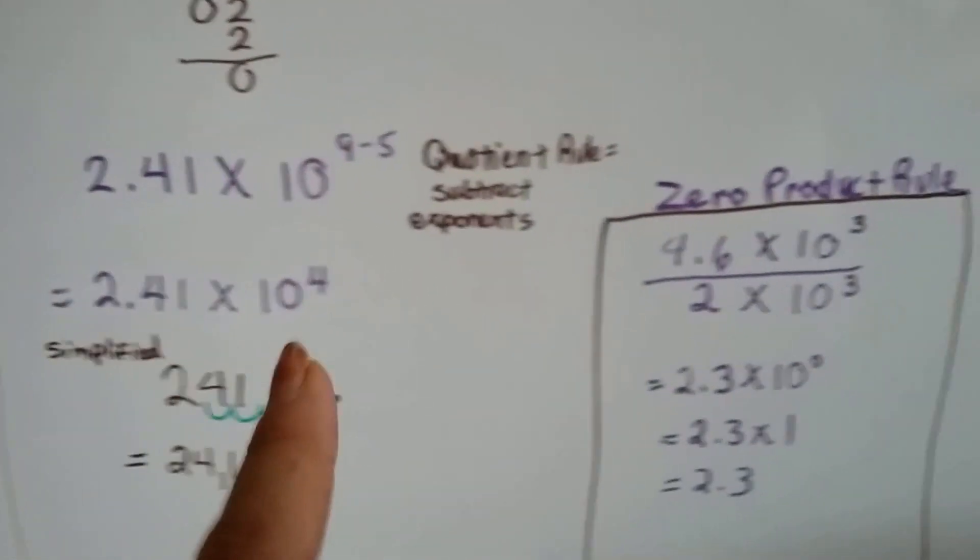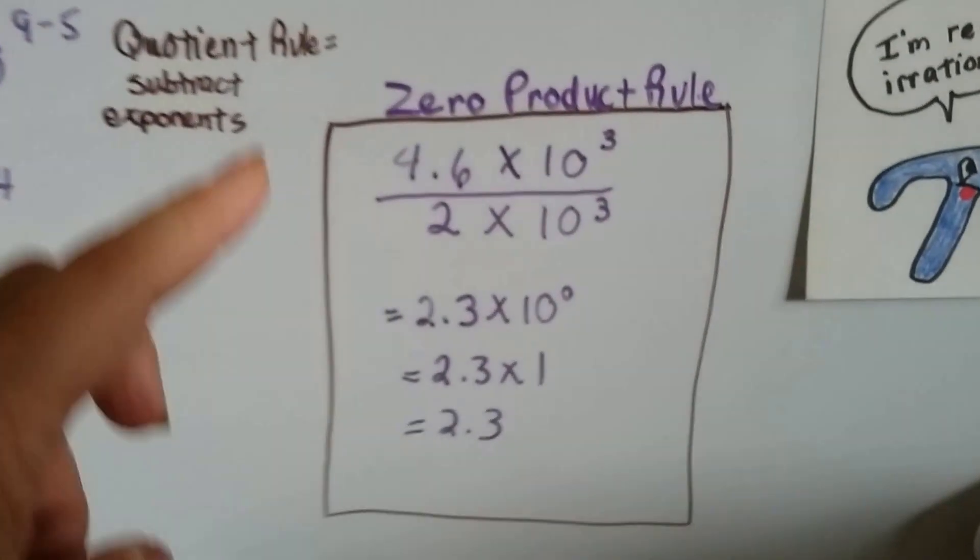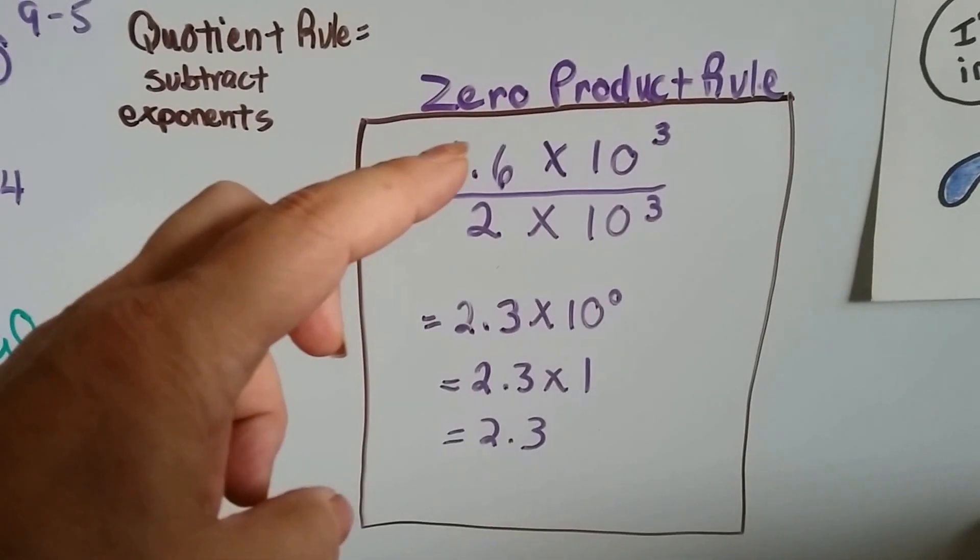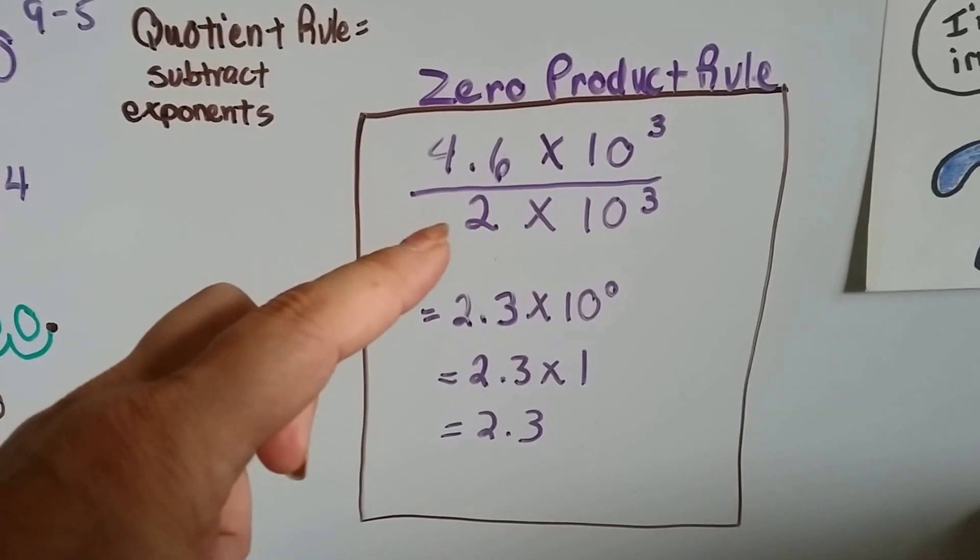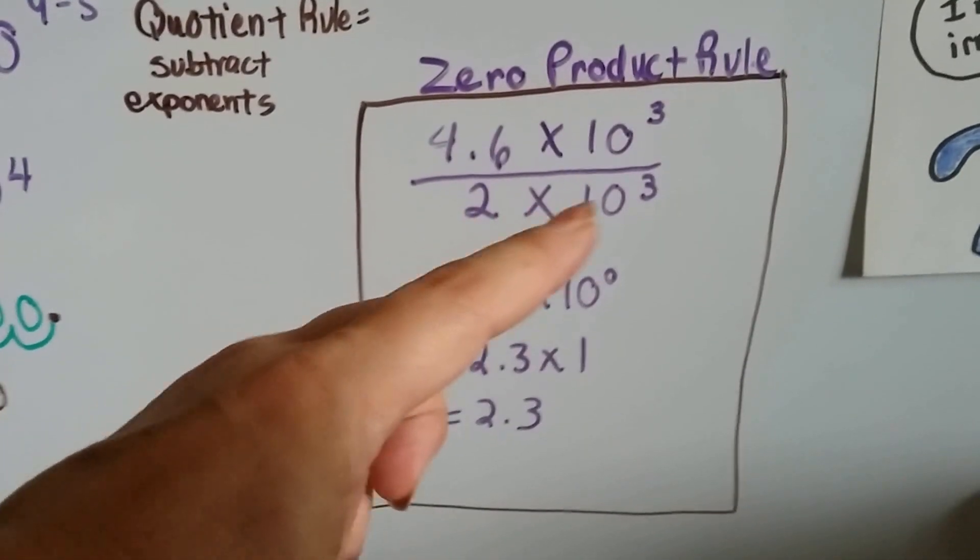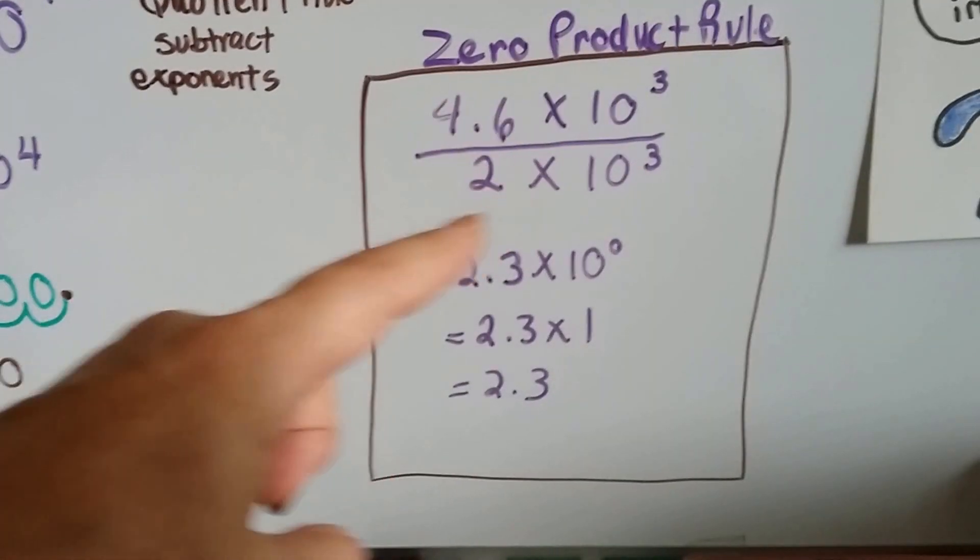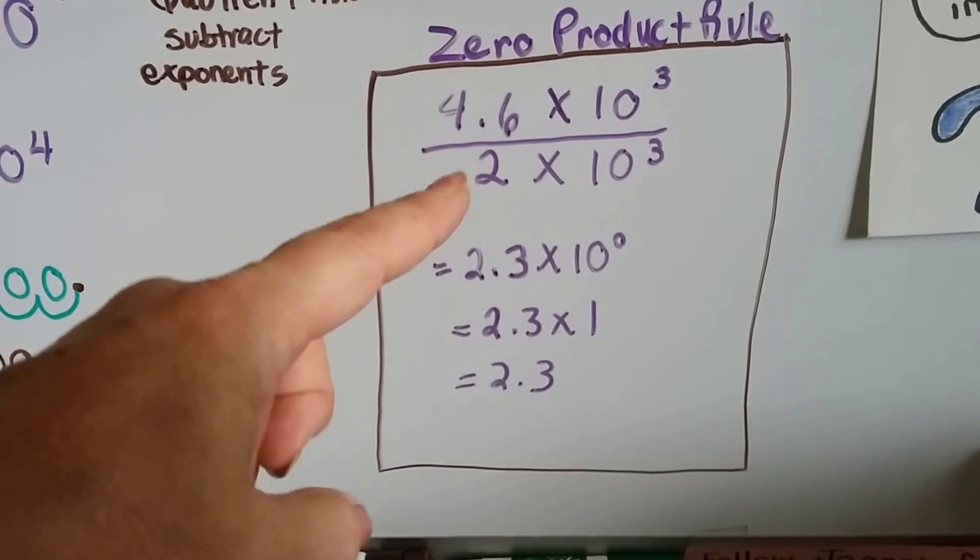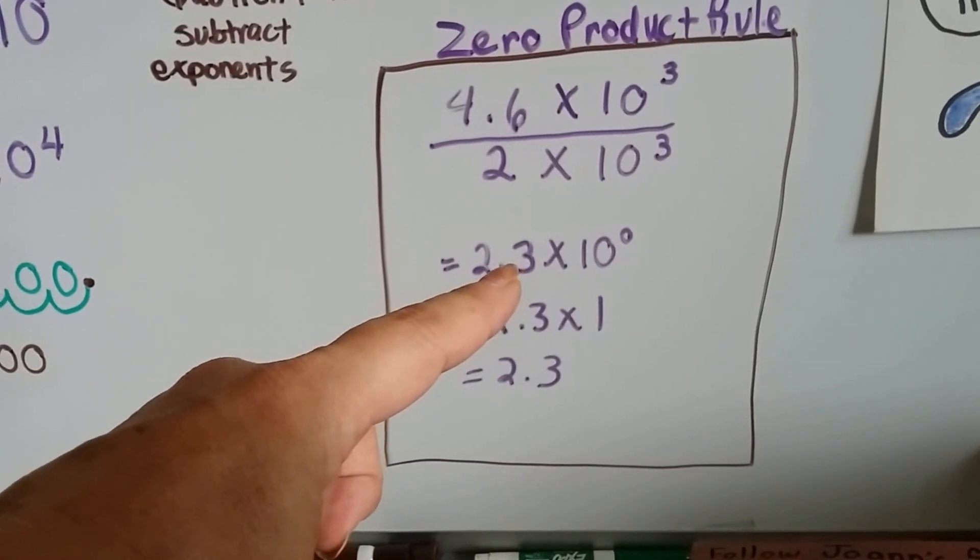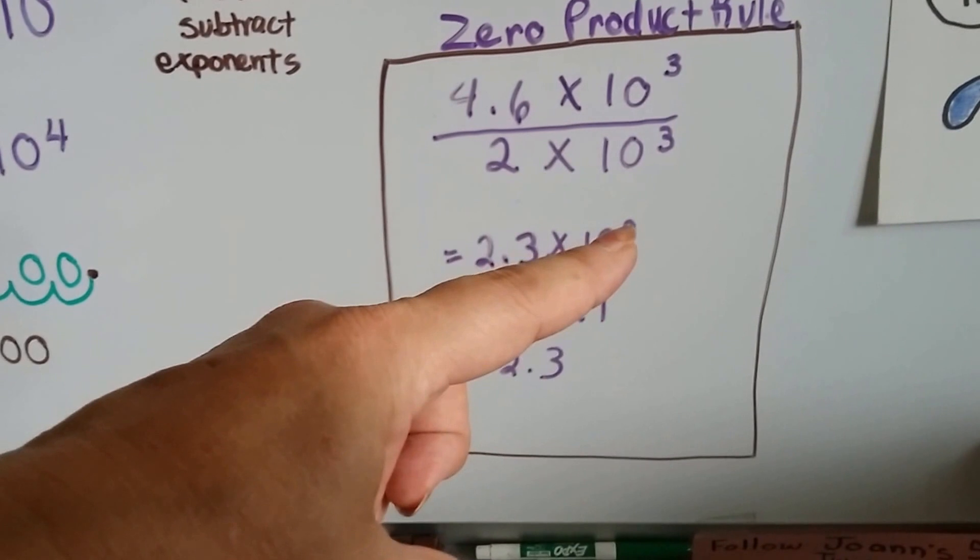Now, what would happen if the zero product rule came into play? What if we were dividing 4.6 times 10 to the 3rd power by 2 times 10 to the 3rd power, and the powers were the same? Well, we would do the multipliers. 4.6 divided by 2 would be 2.3. And, 3 take away 3 is 0.